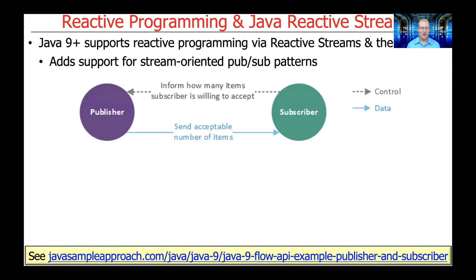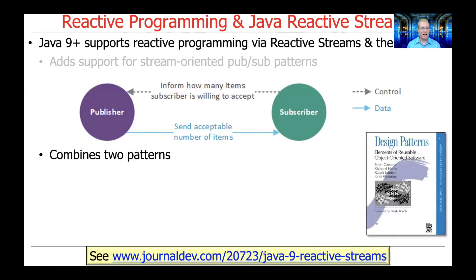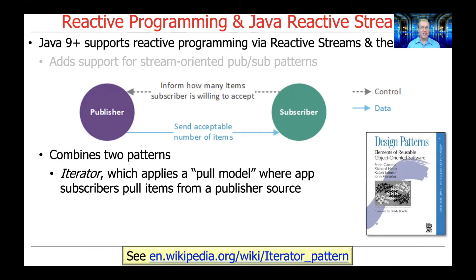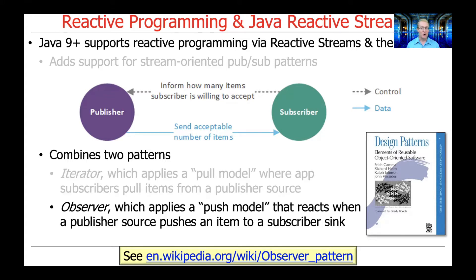This particular class and the interfaces it defines adds support for a so-called stream-oriented PubSub pattern model. This particular model combines two patterns from the famous Gang of Four book. The first pattern is the iterator pattern, which applies a pull model where app subscribers will pull items from a publisher's source. And the other model is the observer pattern, which applies a push model that reacts when a publisher's source pushes an item to a subscriber's sync.